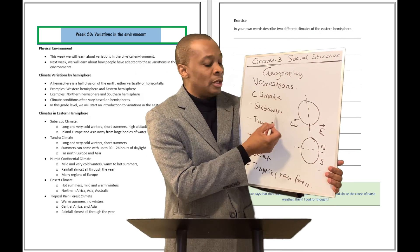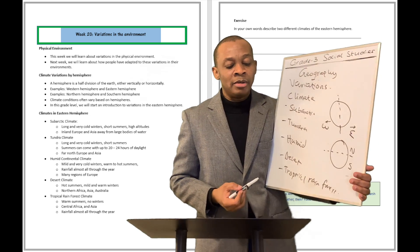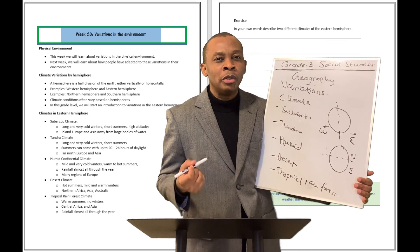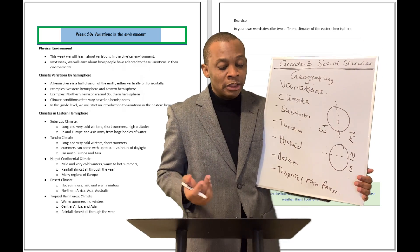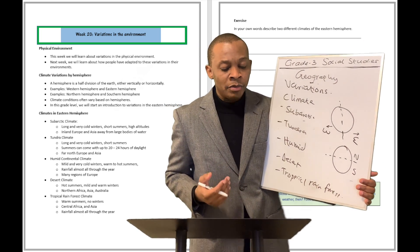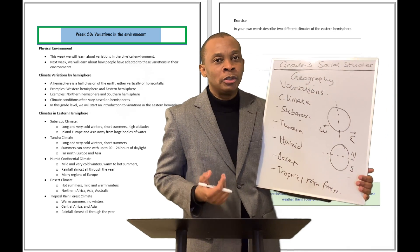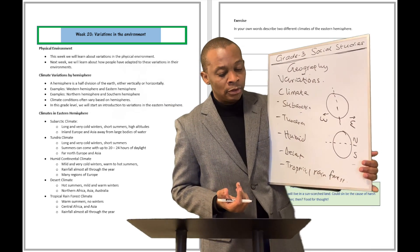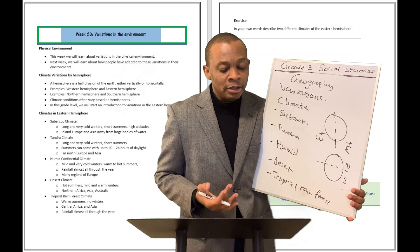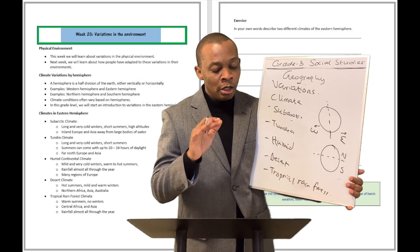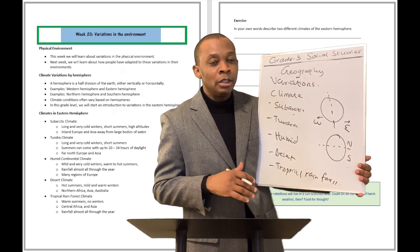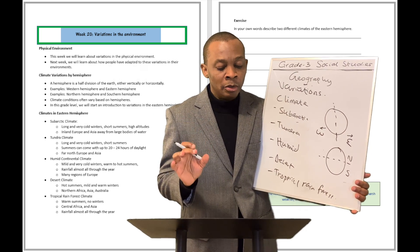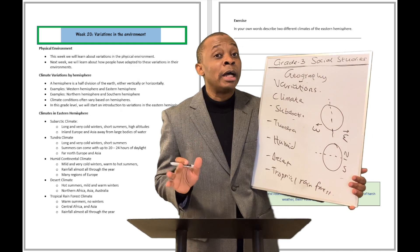The subarctic climate typically happens in inland Europe and Asia. It includes long and very cold winters, short summers, and high altitudes. The tundra climate occurs far north in Europe and Asia, with long and very cold winters, short summers, but no high altitudes.